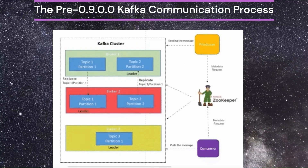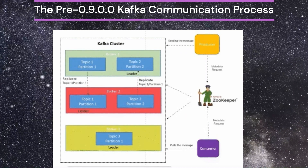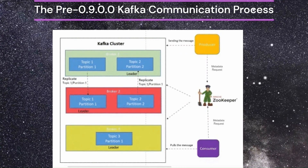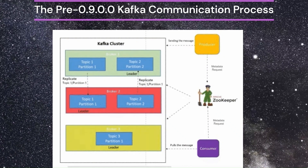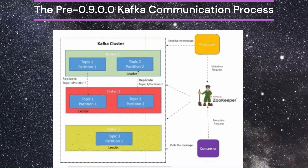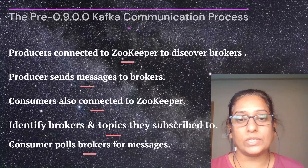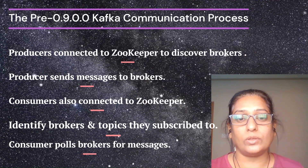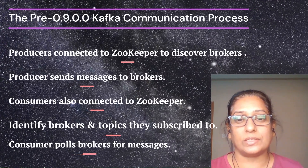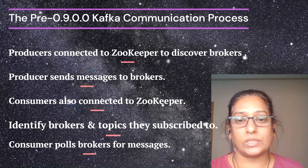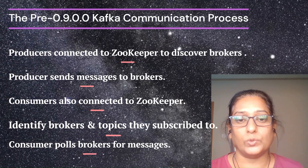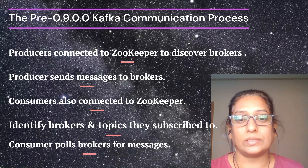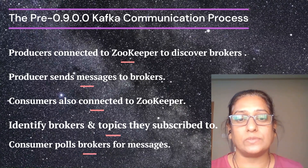As ZooKeeper entirely managed the metadata for Kafka prior to its 0.9.0 versions, producers and consumers had to go through ZooKeeper for any communication. Producers connected to ZooKeeper to gather information on the brokers before sending messages. Consumers connected to ZooKeeper to discover the brokers and the topics they had subscribed to, before polling the brokers about the messages.